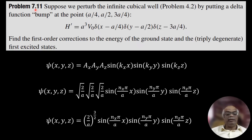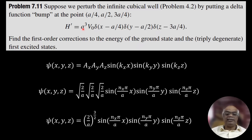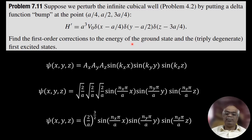In this lecture we will solve problem 7.11 of Griffiths third edition Introduction to Quantum Mechanics. We perturb the infinite cubical well (problem 4.2) by putting a delta function pump at the point a/4, a/2, and 3a/4. The perturbation Hamiltonian is V₀ times the product of three delta functions: δ(x − a/4), δ(y − a/2), and δ(z − 3a/4). We need to find the first-order correction to the ground state energy and the triply degenerate first excited state.